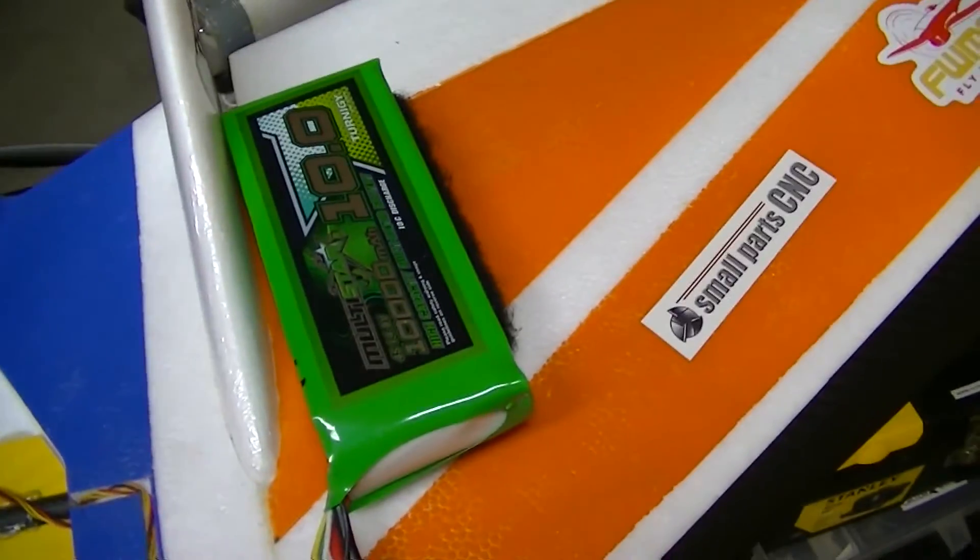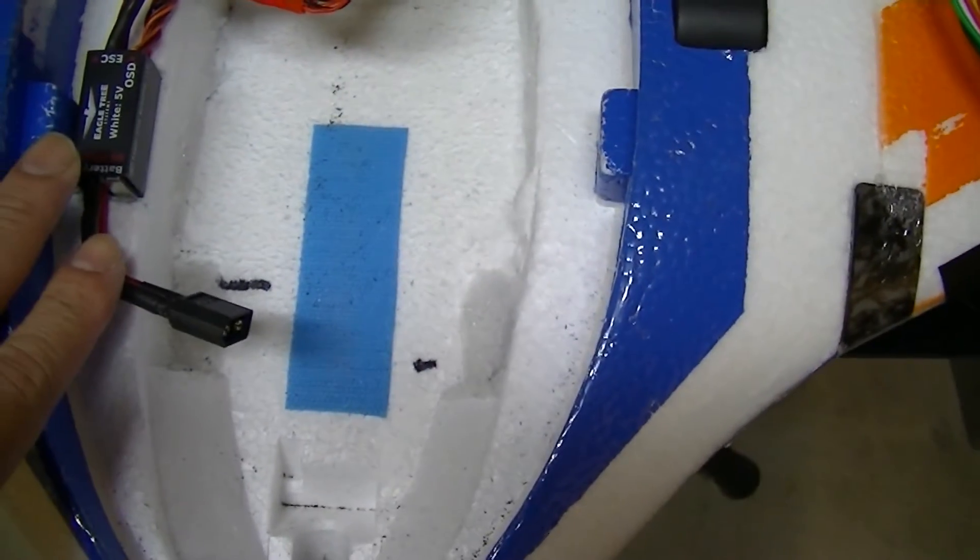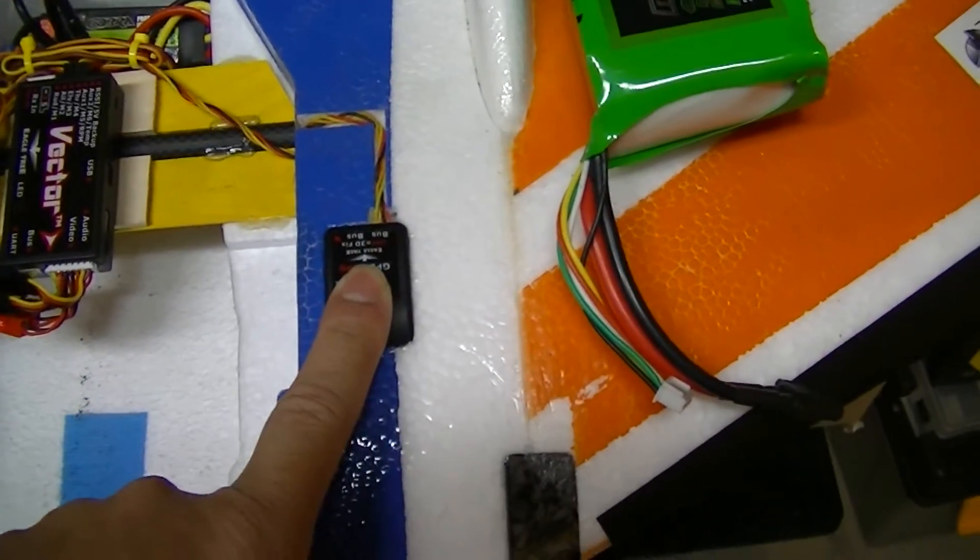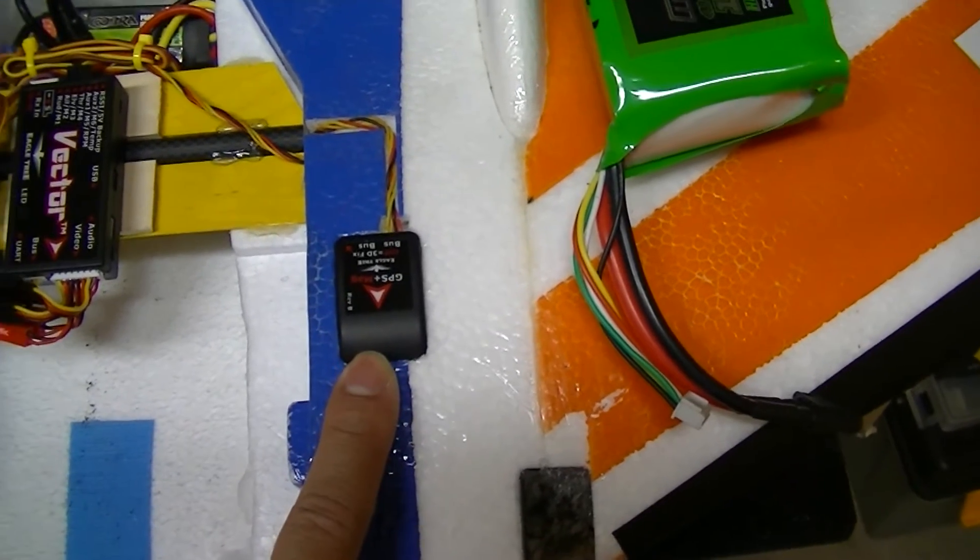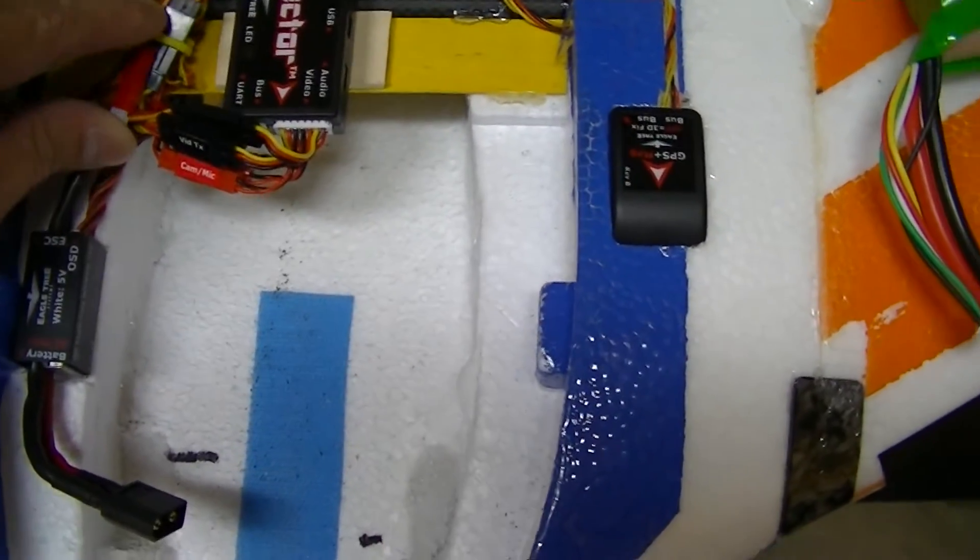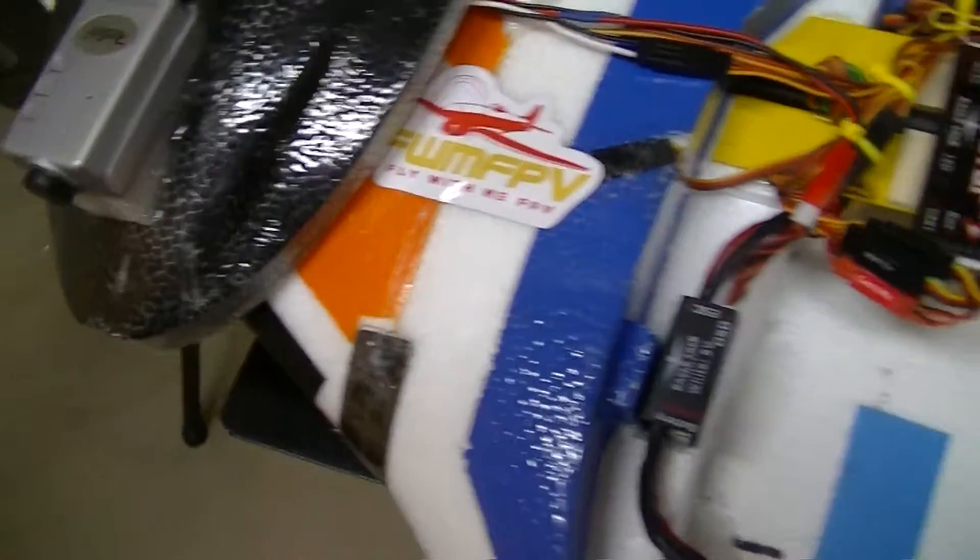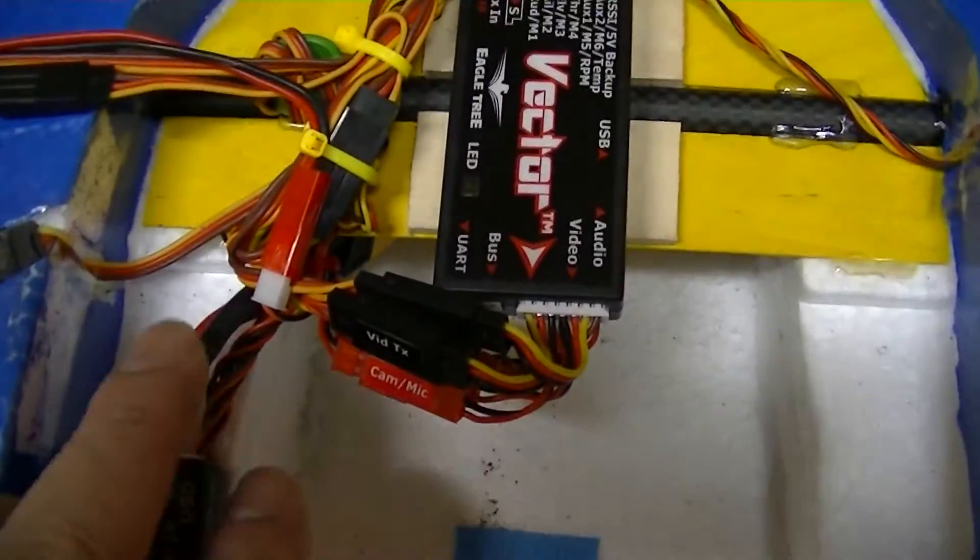So nothing really special. It's just that you don't have to put the GPS out here. And what I did here that is different is, since I'm using a RunCam, it needs 5 volts. So the Vector has a special...